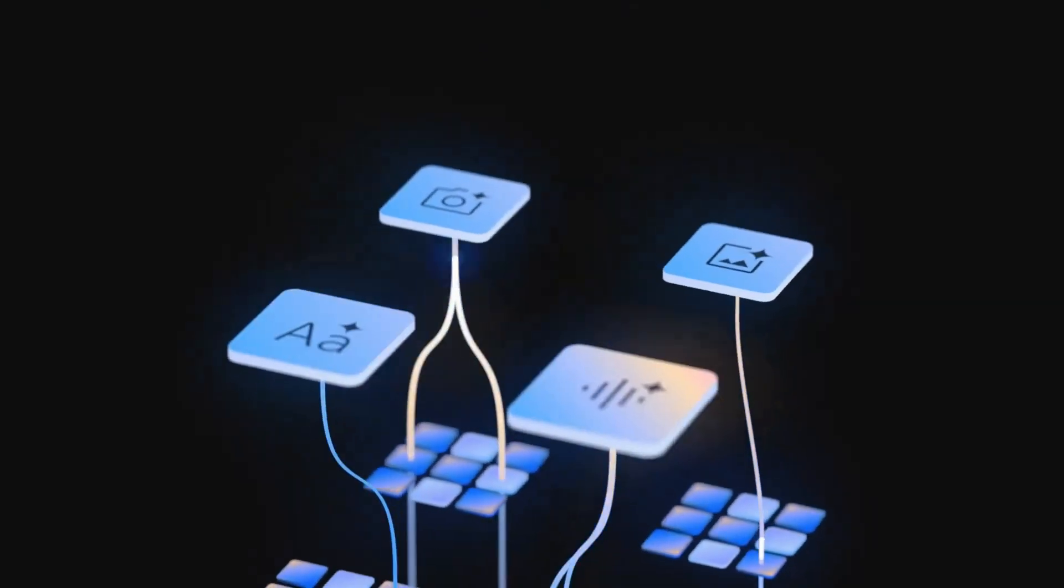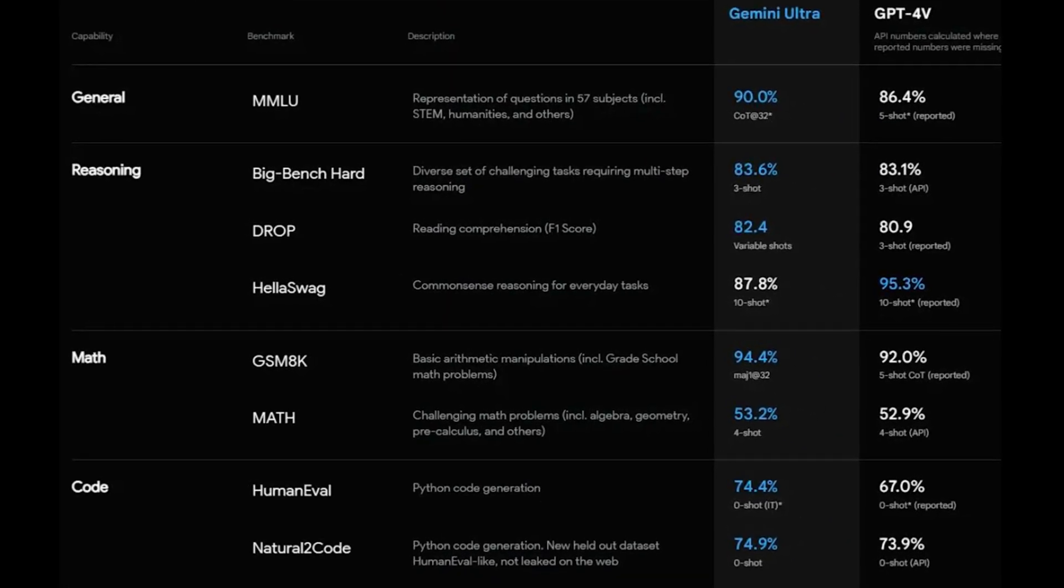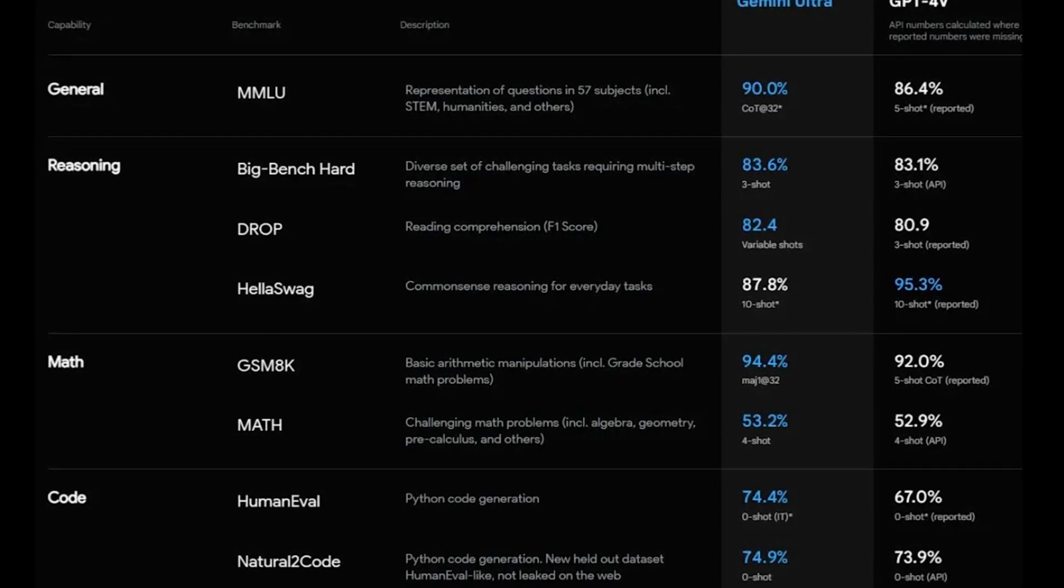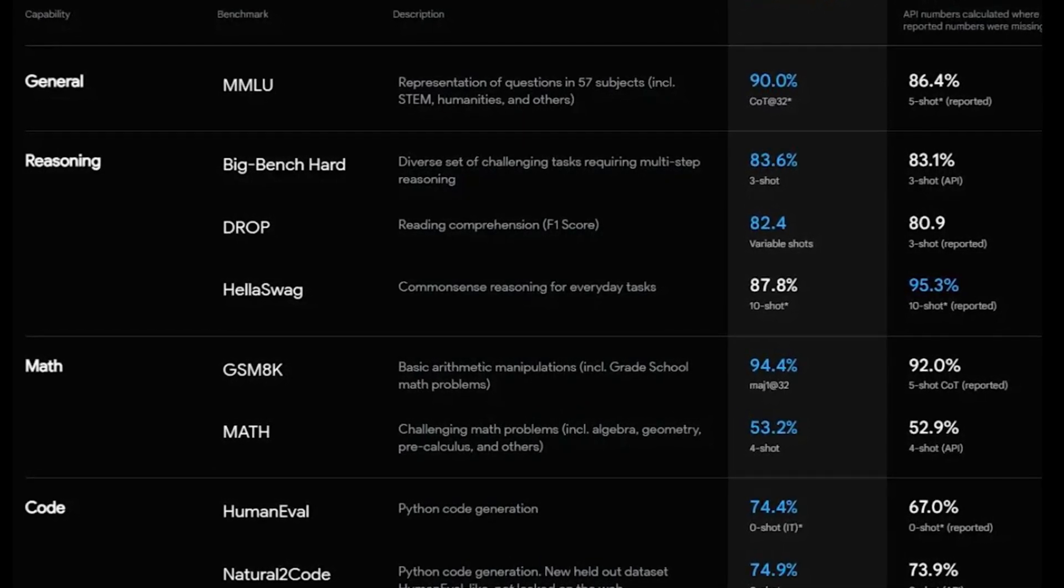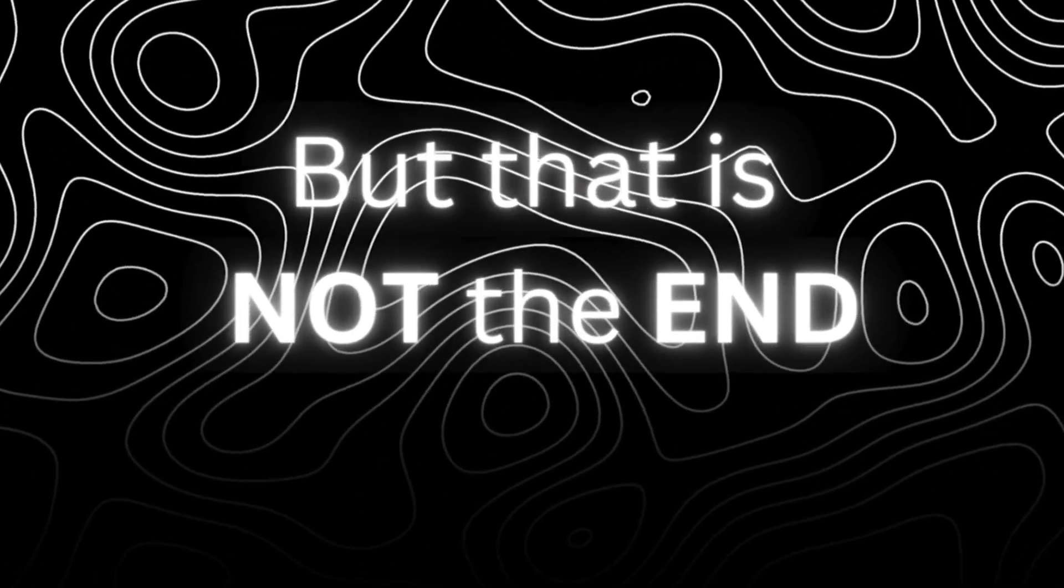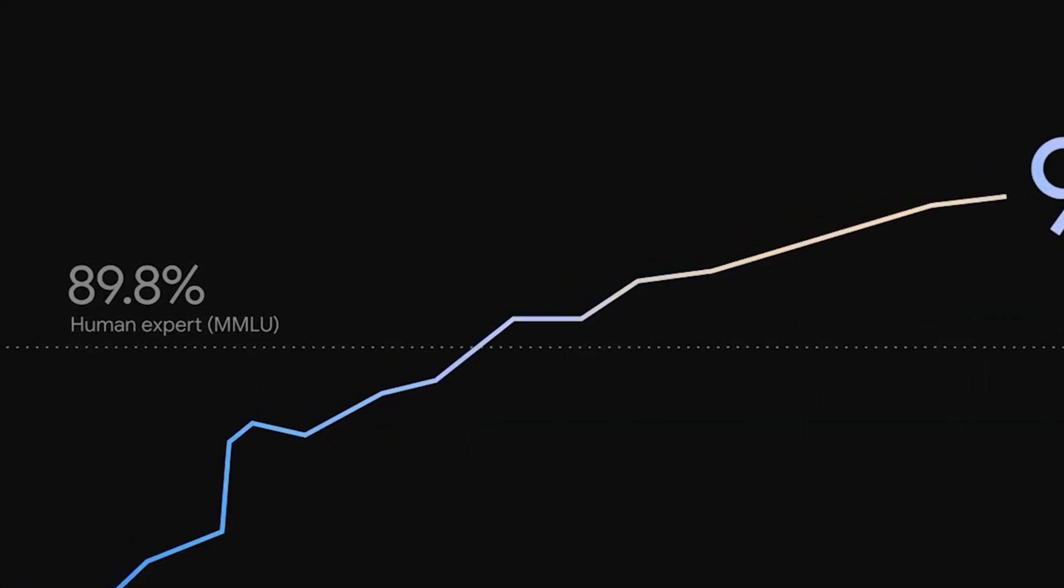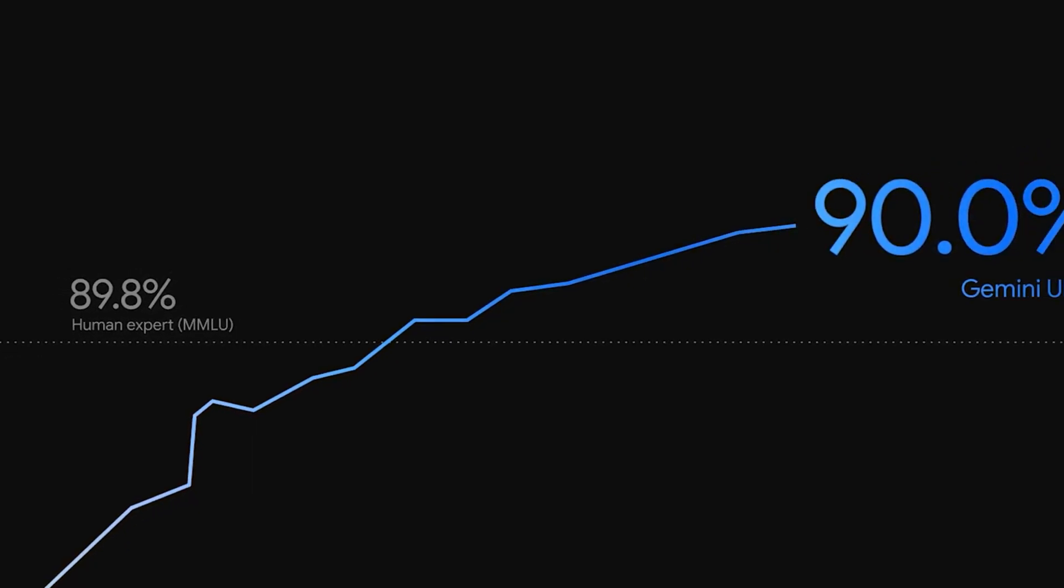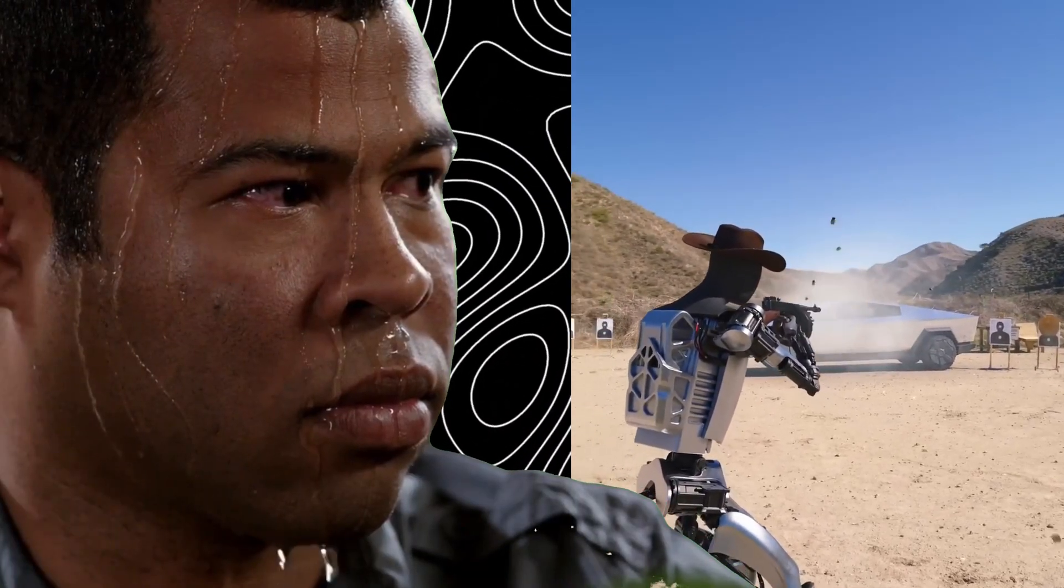Now let's look at the score, where Gemini Ultra achieved 90%, beating GPT-4 by 4%, but that is not the end. As I said earlier, it even beat human experts, becoming the first AI model to surpass humans.